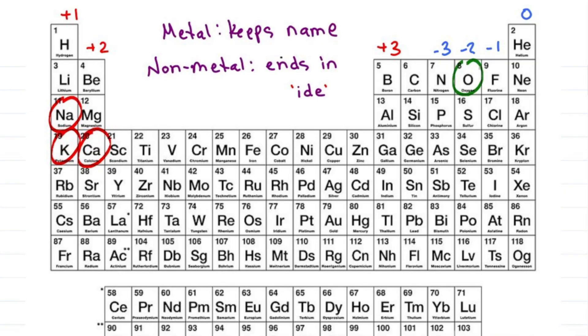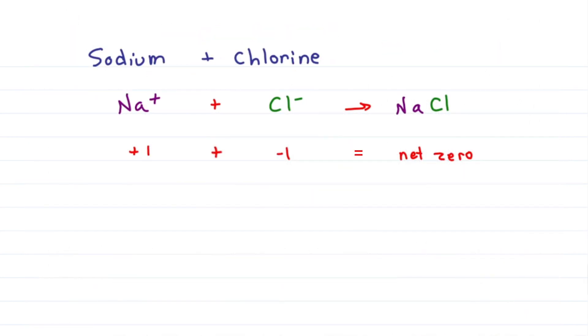A non-metal gets the ending IDE. For example, oxygen becomes oxide, chlorine is chloride, bromine is bromide. Sodium and chlorine would give me sodium chloride.